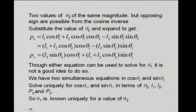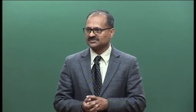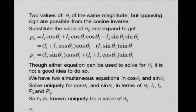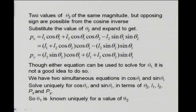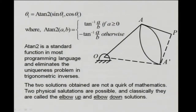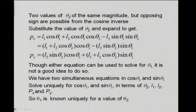The two values of theta2 that you get are of the same magnitude but opposite in sign when you take cosine-inverse. Now, how do you get theta1? You do the obvious thing — you substitute the value of theta2 and obtain expressions for Px and Py. You can then use either of the two equations to solve for theta1.